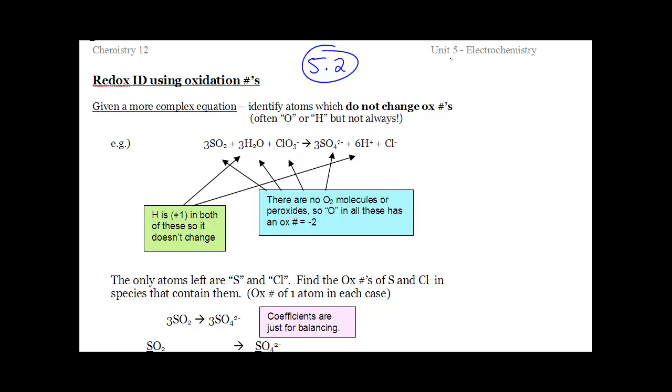Look for peroxides. So there's nothing here that's like H2O2. There's nothing here that's like diatomic, like O2 or H2. And there's nothing here that's a metal with an H. So because none of those are there, every O and every H in this redox reaction is not changing, which means the only options we have is the S to the S and the Cl to the Cl.